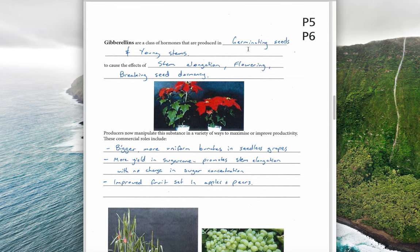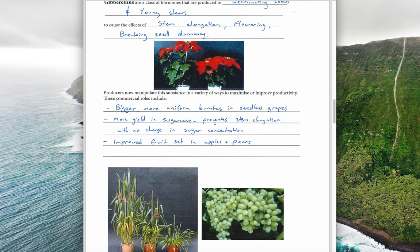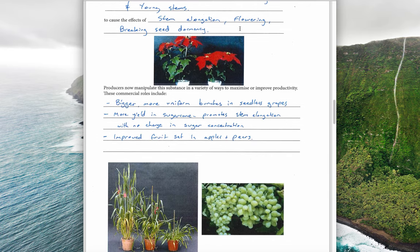Gibberellins are produced in germinating seeds and young stems, and they lead to stem elongation, flowering, and breaking seed dormancy. There is some overlap with auxins on stem elongation, but gibberellins also specifically promote flowering and break dormancy. Commercially, they can produce bigger, more uniform and seedless bunches of grapes, increase yield in sugarcane by elongating stems while maintaining the same sugar concentration, and improve fruit set in apples and pears by increasing the amount of fruit through effects on flowering.